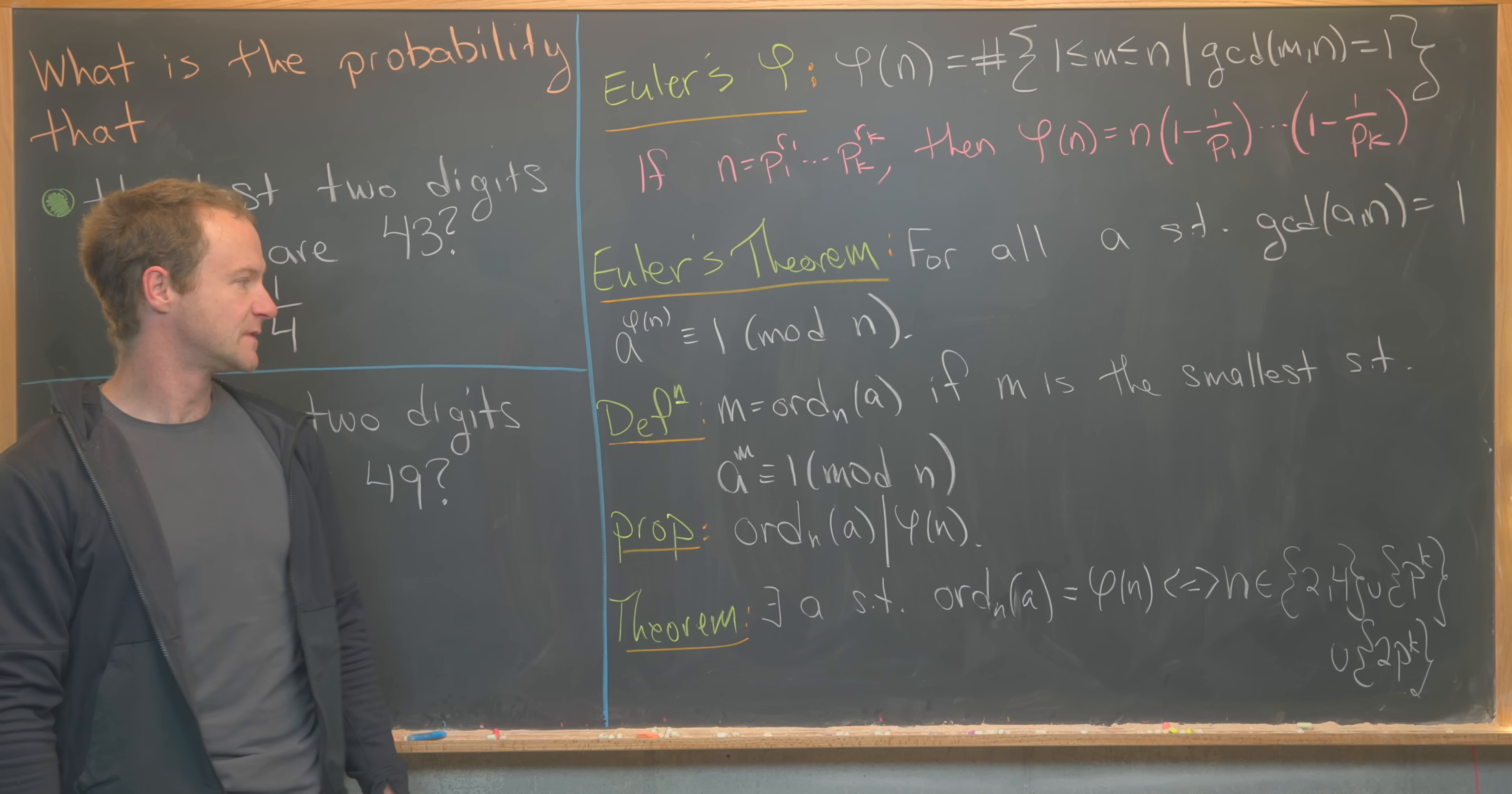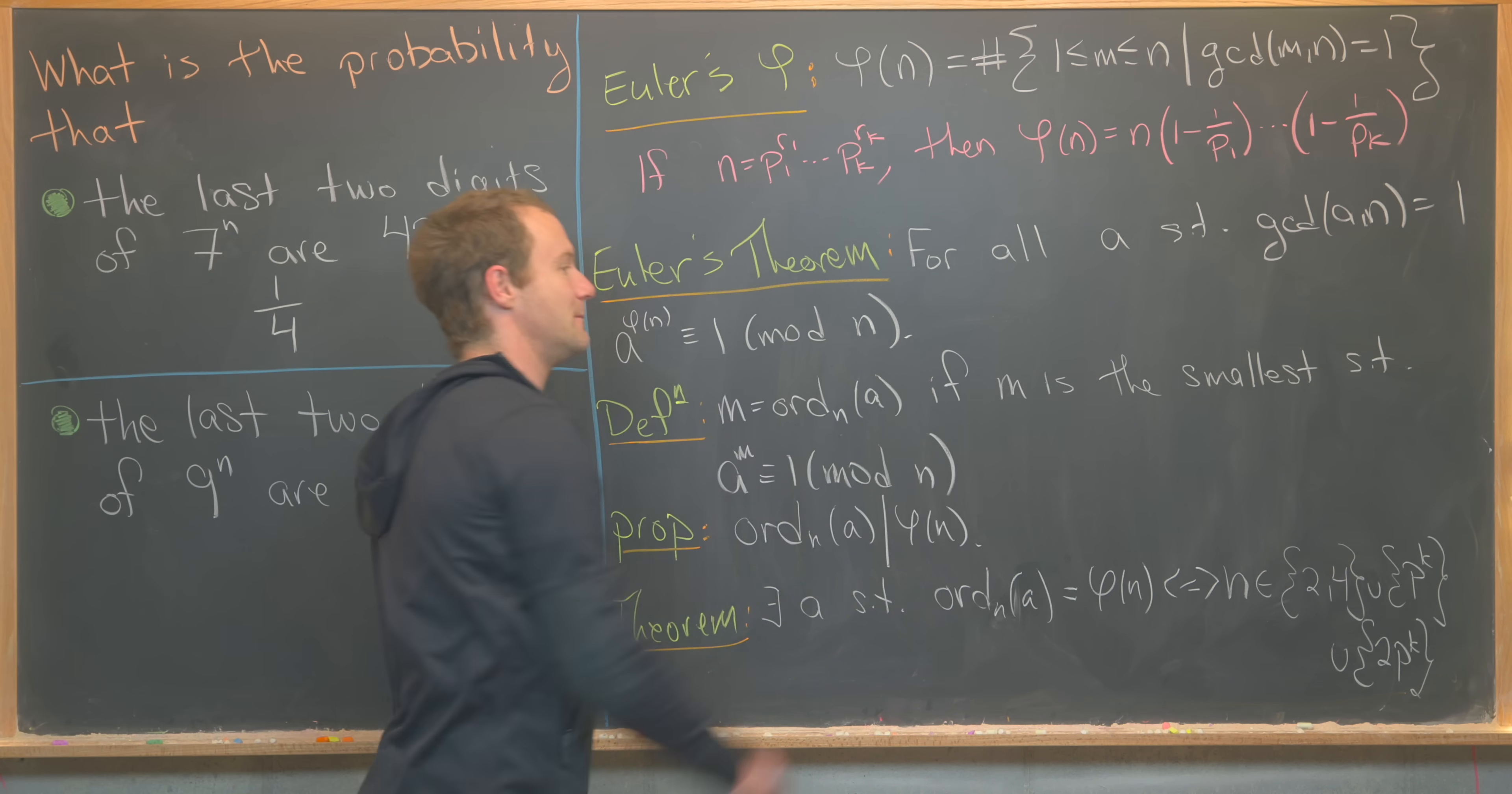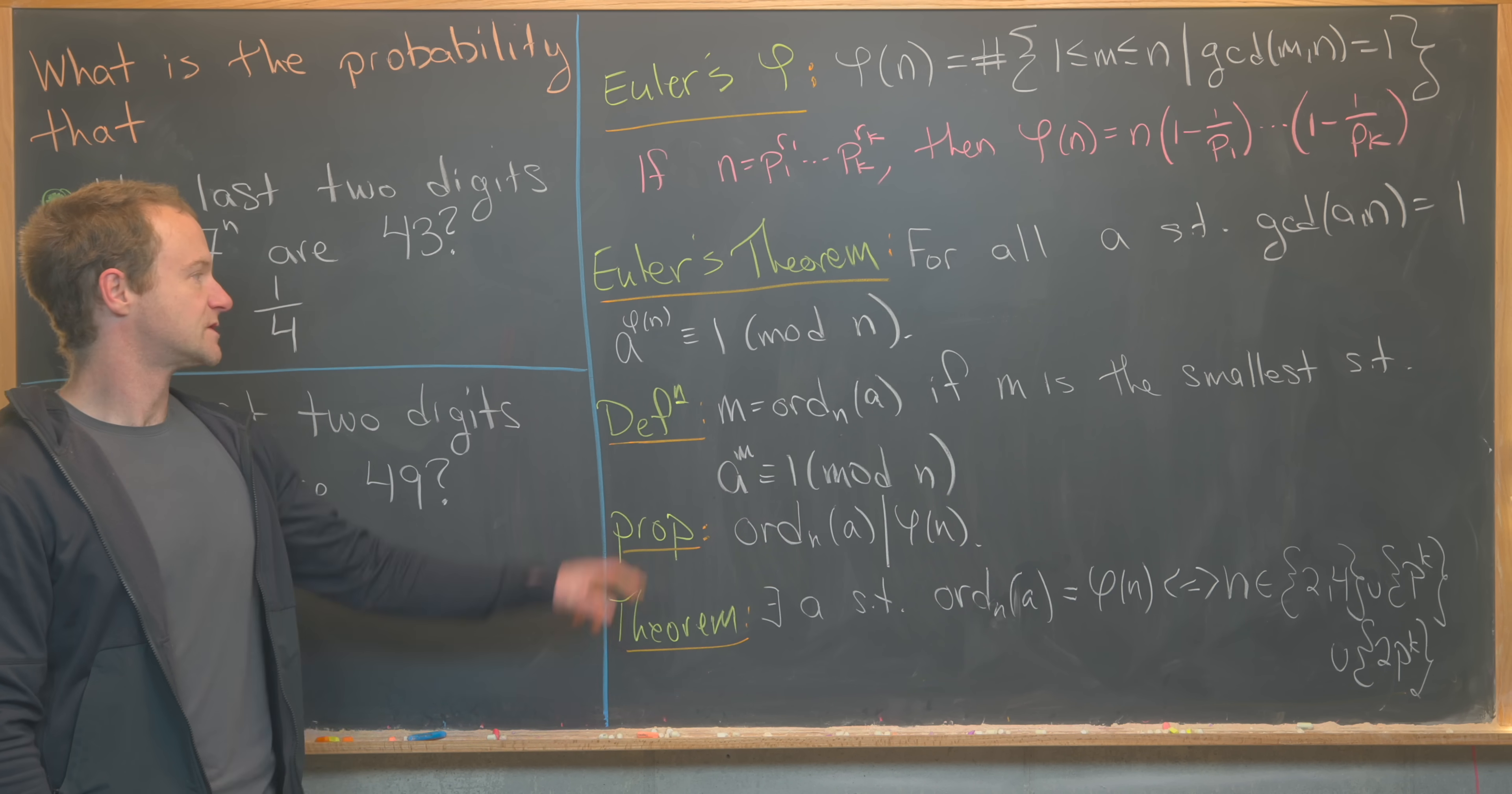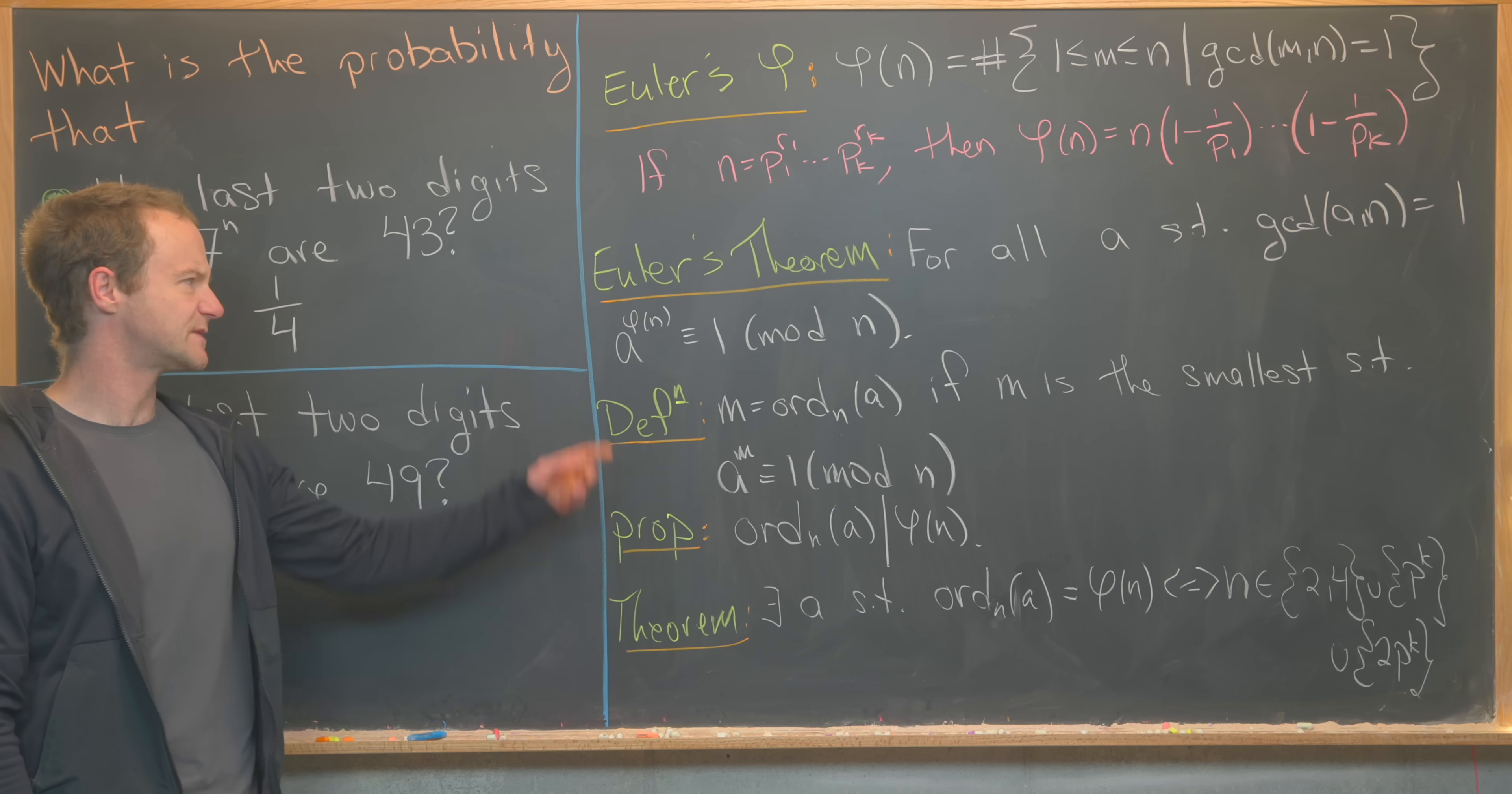That brings us to this notion of the order of an integer modulo n. So that's this definition. So we say that m is equal to the order of a mod n, that's how we read that, if m is the smallest number such that a to the m is congruent to 1 mod n. So it's the smallest thing that if you raise a to that power, you get back to the identity element. So sometimes that might be phi of n, but sometimes it won't be phi of n. And here's a proposition which is easy to prove: the order of an element modulo n always divides phi of n. So that's pretty clear from Euler's theorem and then the division algorithm.